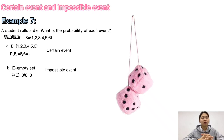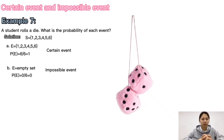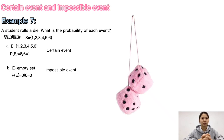Next, the number rolled is 9. Since it is not possible to roll a 9 with a single die, the event is an empty set, E = ∅. So the probability is P(E) = 0/6 = 0, which means the event is an impossible event.